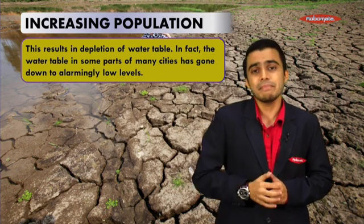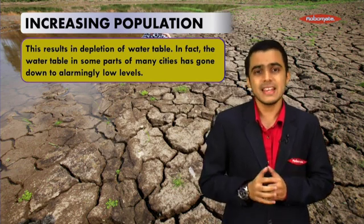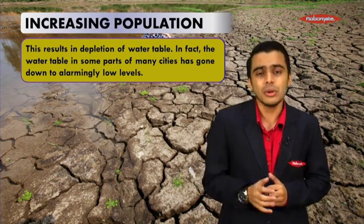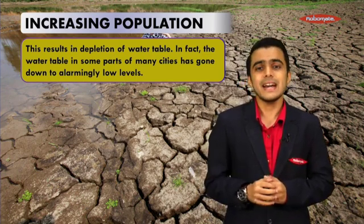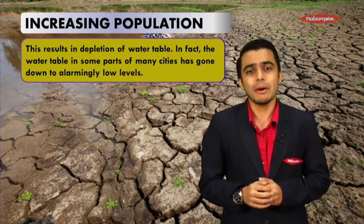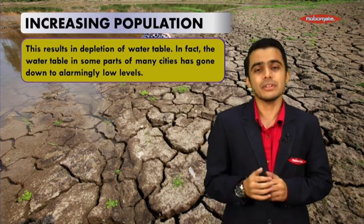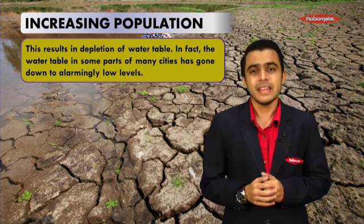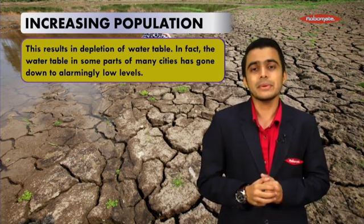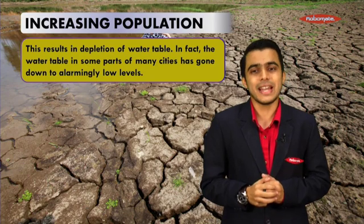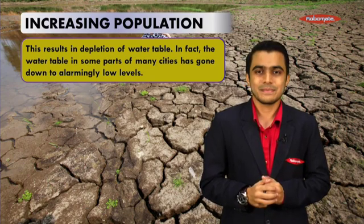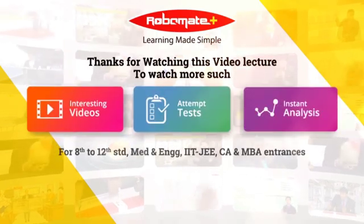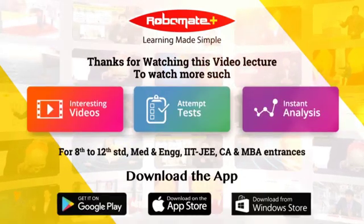The water table in some parts of many cities has gone down to an alarming low level. We have studied how increasing population leads to the depletion of water table. In the next module we'll be talking about increasing industries and agricultural activities affecting the water table.